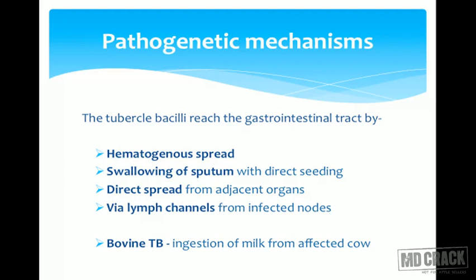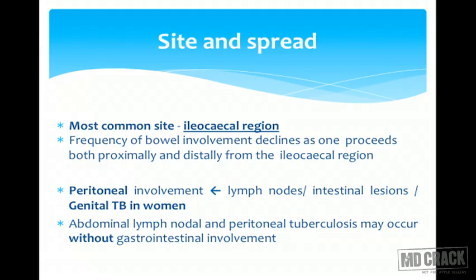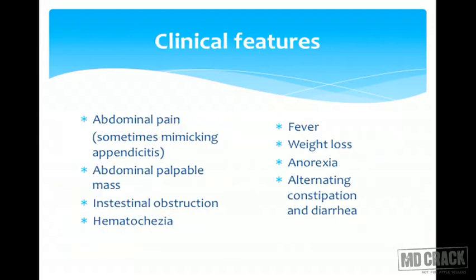The most common site of GI involvement is the ileocecal region. Though tuberculosis can affect any part of the GI tract, the ileocecal junction is most commonly involved; areas before and beyond that are less commonly affected. The peritoneum can equally commonly get involved, and peritoneal infection comes from lymph nodes, the genitourinary tract in females, and intestinal lesions. Abdominal lymph node tuberculosis and peritoneal tuberculosis can occur without ileocecal involvement.